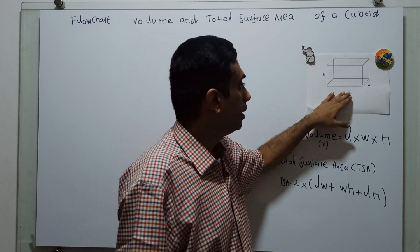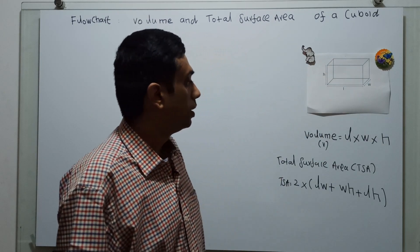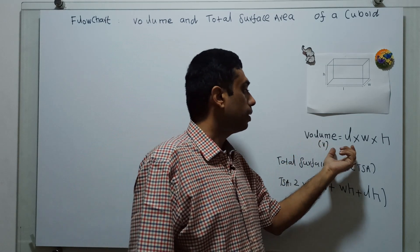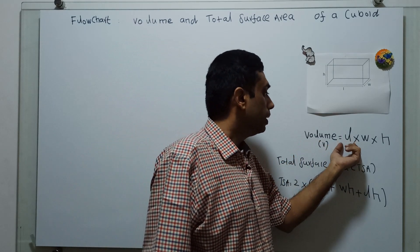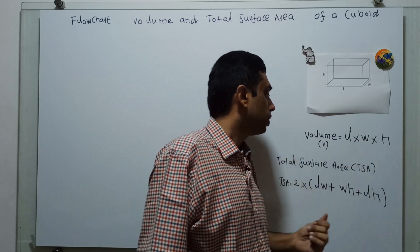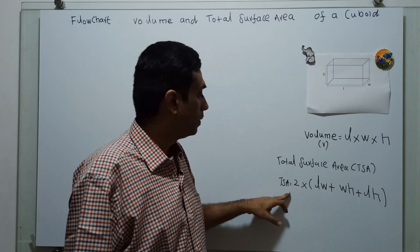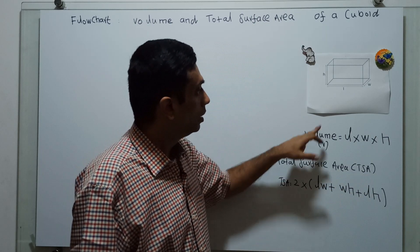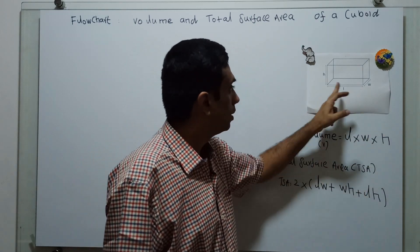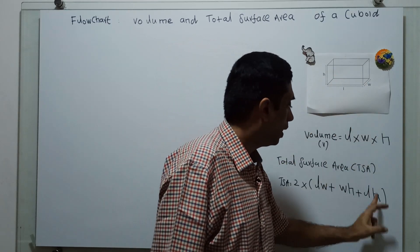The cuboid has a length, width, and height of different dimensions. The volume of a cuboid formula is: Volume = length × width × height. The total surface area, using variable TSA, is equal to 2 × (length × width + width × height + length × height).